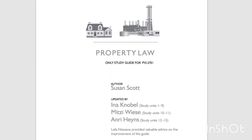The following things are excluded from commerce (res extra commercium) and are therefore not negotiable. First, res communes — free air and things that are really only susceptible of human control by communal use. Secondly, res publicae — things that belong to the state but that are used for the general benefit and use of the public, for example, national parks and the seashore. Thirdly, other res extra commercium — things that are not freely negotiable for other reasons, for example, body parts or a corpse — for religious or ethical reasons, a corpse and parts of a corpse are not regarded as things.